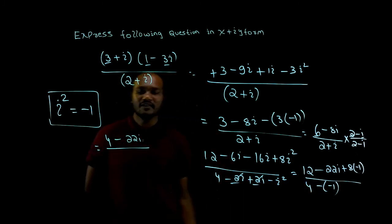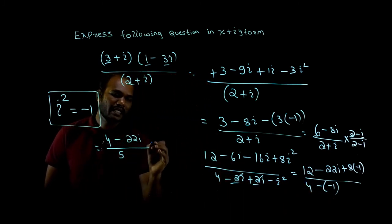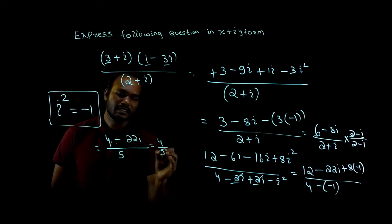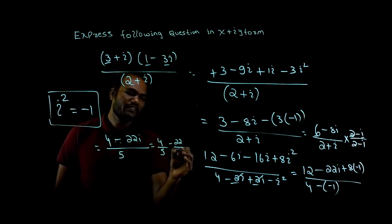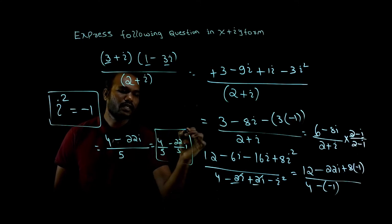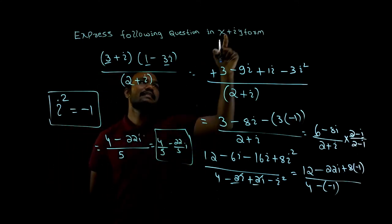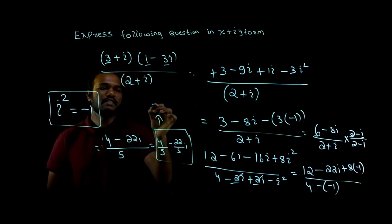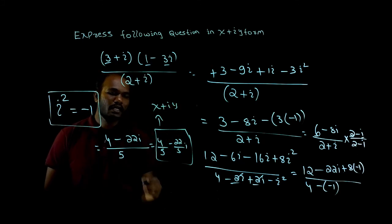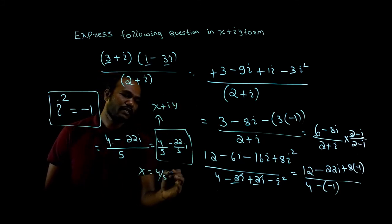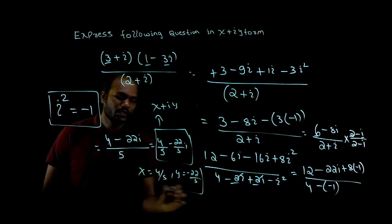So I can write this as 4 by 5 minus 22 by 5 i. If I compare with this x plus i form, x value is 4 by 5, y value is minus 22 upon 5.